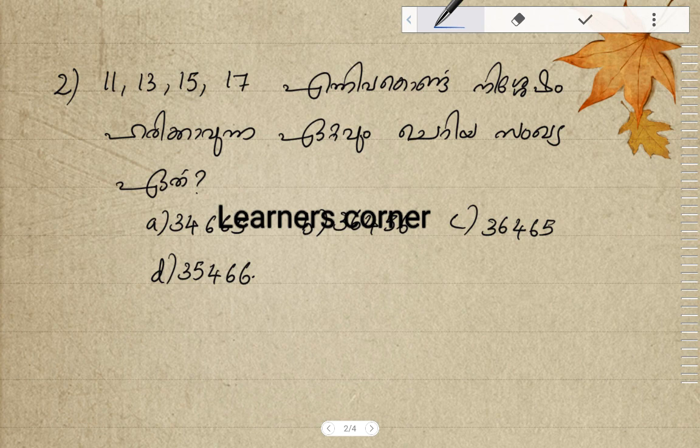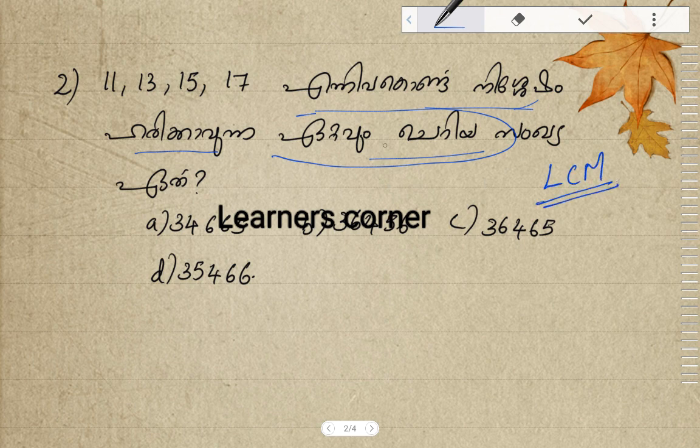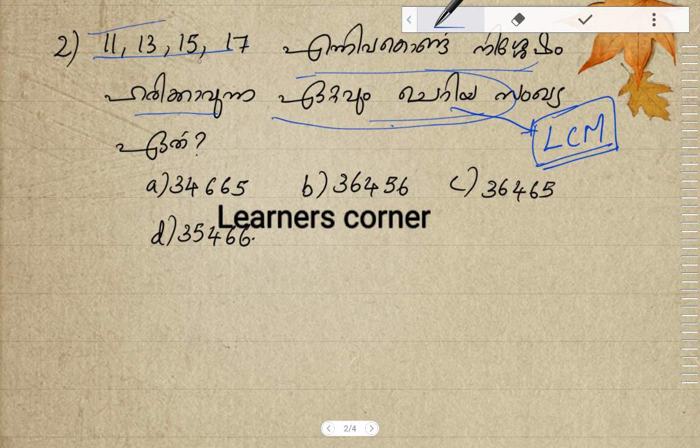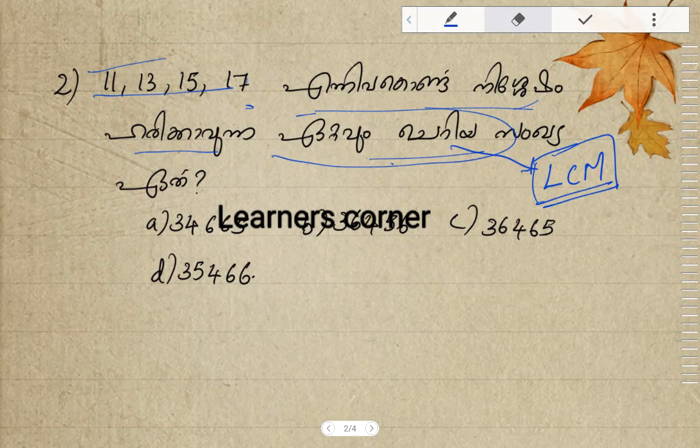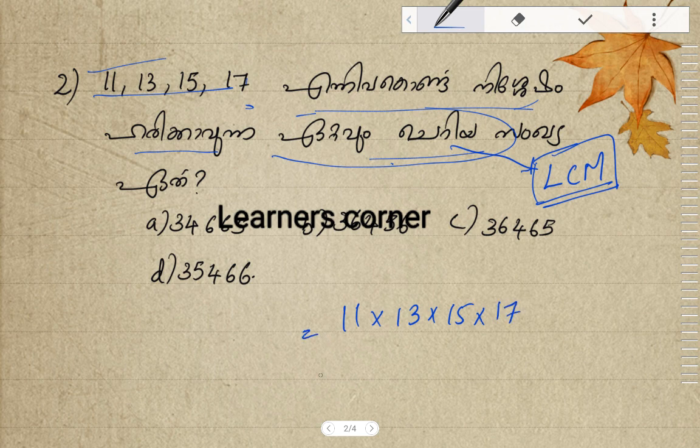It says 11, 13, 15, 17. We need to find the LCM. Since 11, 13, 15, 17 have no common factors, we calculate the LCM by multiplying: 11 times 13 times 15 times 17.